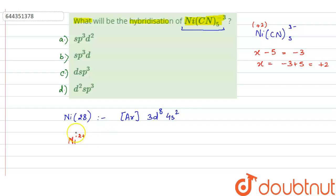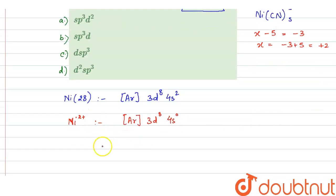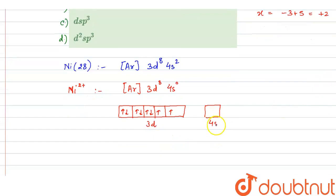Now in nickel two positive state, Ni^2+ will be formed when it loses two electrons and that will be lost from 4s orbital, so its configuration will be [Ar] 3d8 4s0.